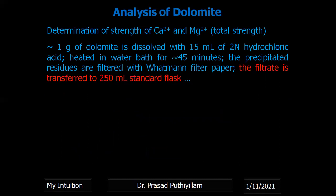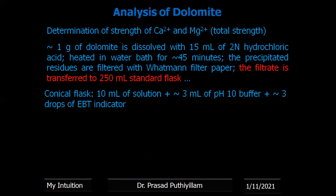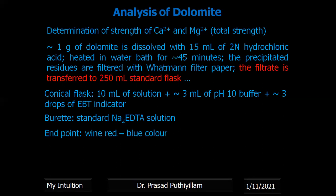Determination of total calcium and magnesium strength: 10 ml of the solution from the 250 ml standard flask is pipetted into a conical flask. Approximately 3 ml of pH 10 buffer is added, and 3 to 4 drops of EBT indicator are added — it will be wine red in color. In the burette, standard disodium salt of EDTA is taken. Titration is done; once calcium and magnesium ions completely react with EDTA, the indicator is set free and converts to blue. Total strength = (molarity × volume of EDTA) / 10 ml.